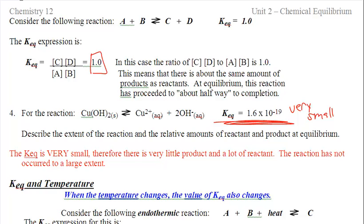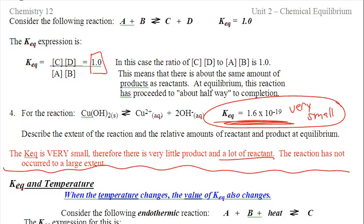If you get a ratio of one for Keq, you have a special case where you have the same amount of reactants and products — it's rare, you'll probably never see it, but it does exist. Example number four: describe the extent of this reaction. 10 to the negative 19 is a very small number; very small numbers mean very little product and a lot of reactant, so you can say this reaction has not reacted very much at all. That's basically the end of the Keq.